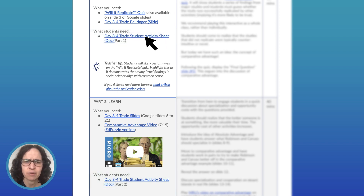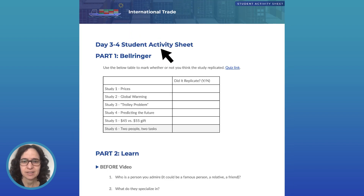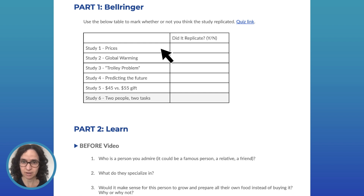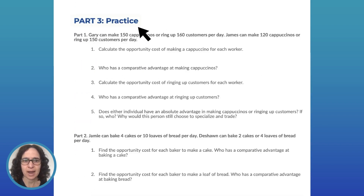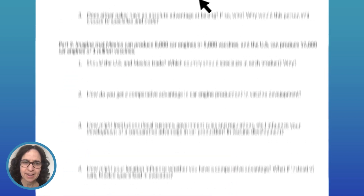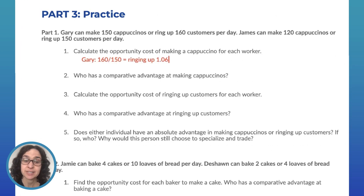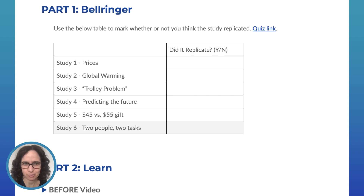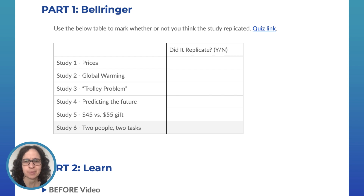Let's look at the student activity sheet now. This is what your students see. It's broken up into parts that coordinate with the teacher's day three and four doc: bell ringer, a learn section, a practice section, and an exit ticket. You'll need to share the exit ticket with your students, which is in your teacher lesson plan. As we scroll through, we see various places where students can insert their answers and links to activities for them to complete. If there's anything you'd like to customize, like changing a question or rewording something, you can make a copy of everything and edit it however you like, because it's in Google Docs.